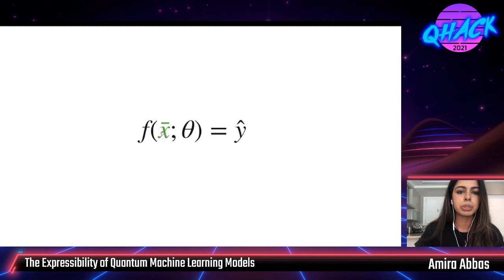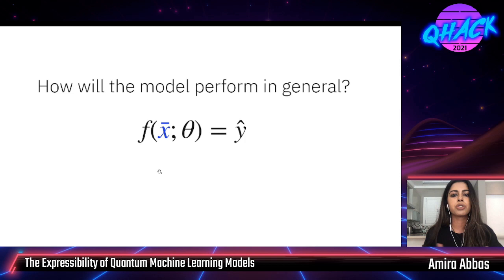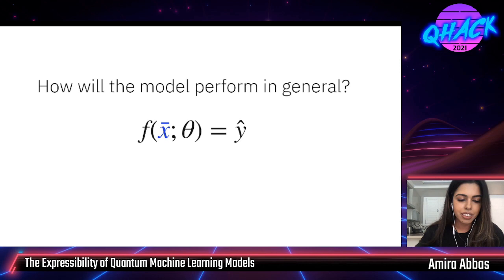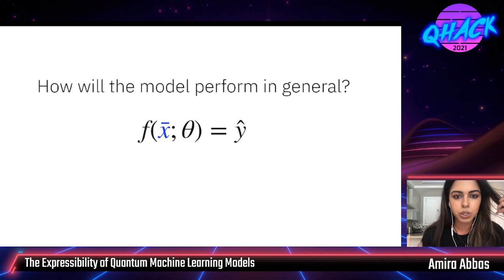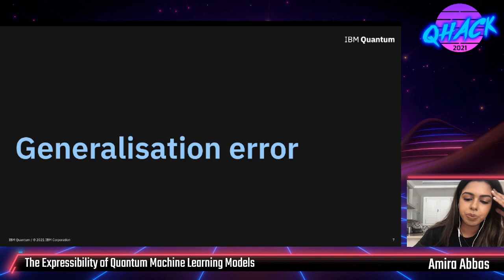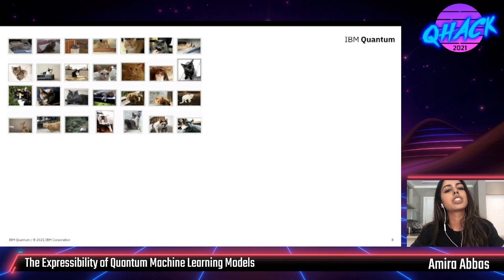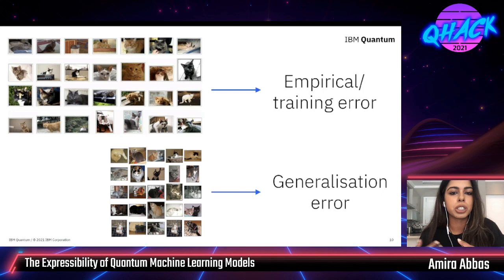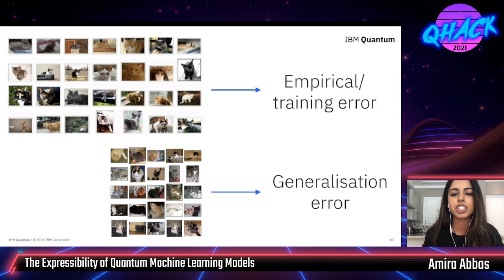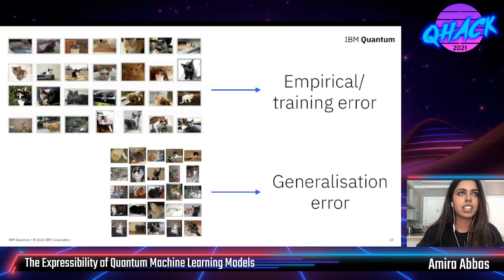Very often we don't have access to all the data, so we have some subset X-bar, and we try to approximate true relationships with a parameterized function. The natural question is: once you've picked a model, how good is it? If you look at a different subset of the data, how will your model perform on new, unseen data? This is exactly what generalization means — how well does your model generalize on new information? If you pick a model it will have some inherent error associated with it, which we call generalization error.